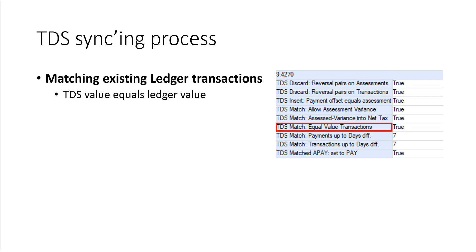Matching, at its most basic, involves a TDS transaction for a client, tax type, and tax year matching an existing ledger transaction with the same amount and date. The equal value transactions setting, as highlighted, must be set to true in order for any of the subsequent matching rules to be applied.